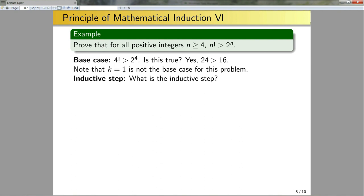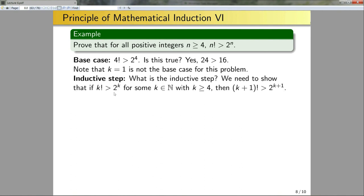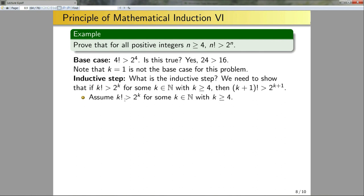Now for the inductive step — pause and think about what it would be. For this problem the inductive step is: if k! > 2^k for some k in N with k≥4, then (k+1)! > 2^(k+1). Notice that the restriction k≥4 explicitly comes from the restriction on n in the proposition we want to prove.